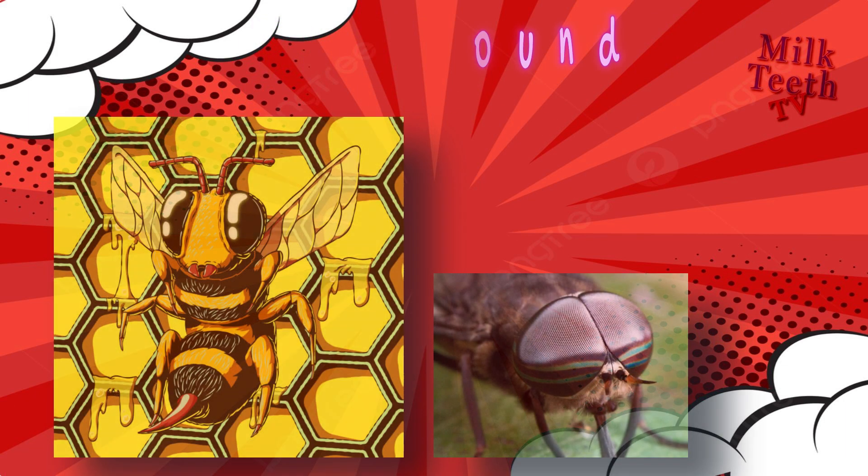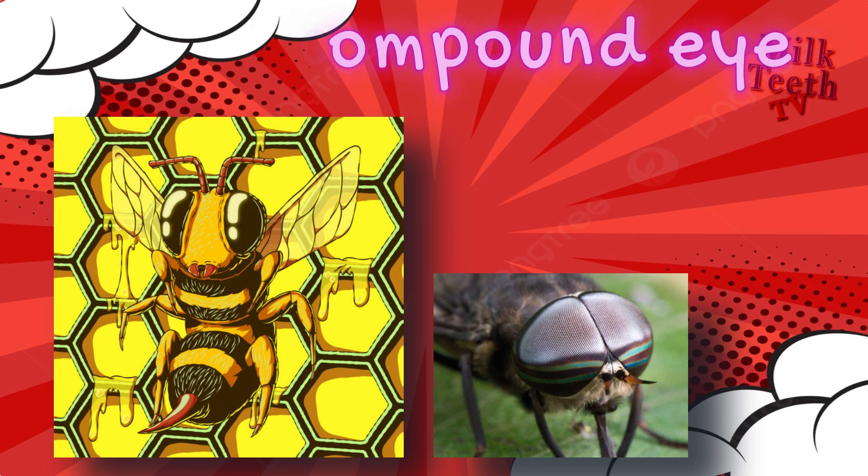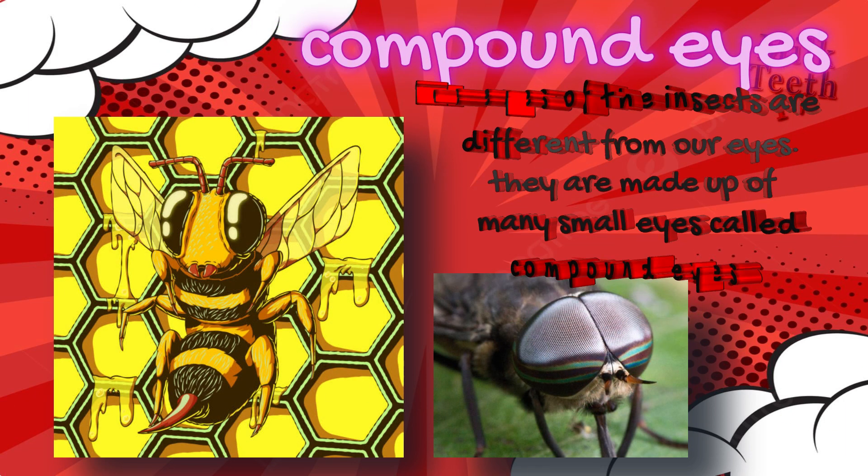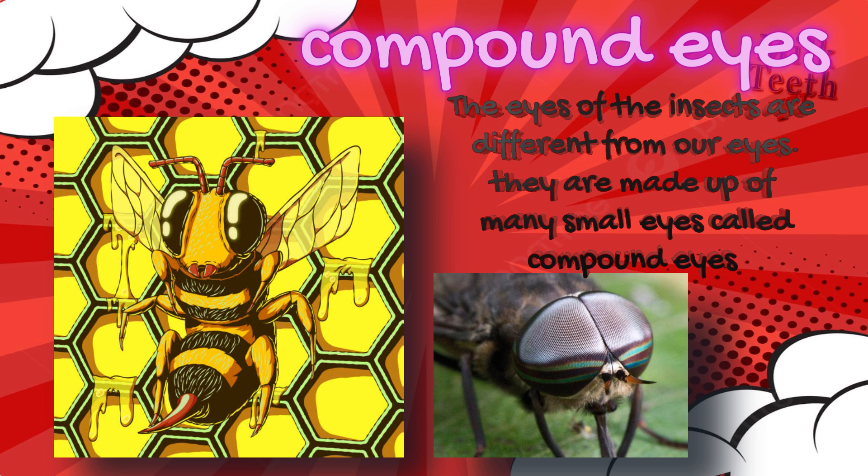The eyes of insects are different from our eyes. They are made up of many small eyes called compound eyes.